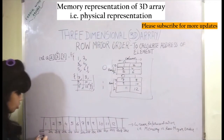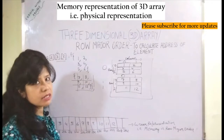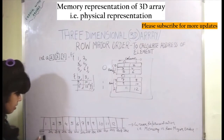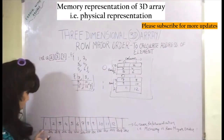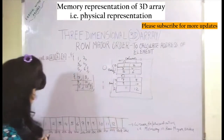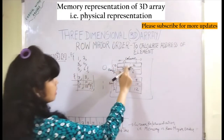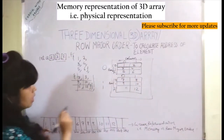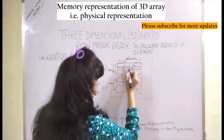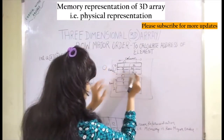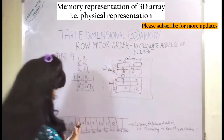Let us consider the starting memory address to be 200. Memory addresses are always in hexadecimal form, but we take this for simplicity. Since it is an integer, each element takes 4 bytes, so there is a gap of 4 bytes between each element. First, the zeroth element is filled row-wise: the 0th row has values 1 and 2, then the first row has 3 and 4, then the second row has 5 and 6.